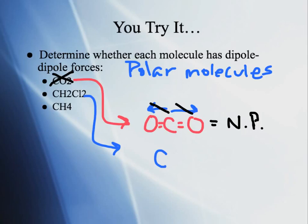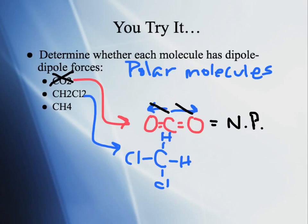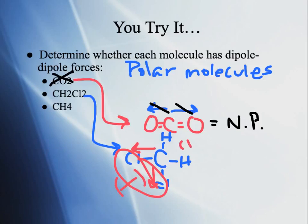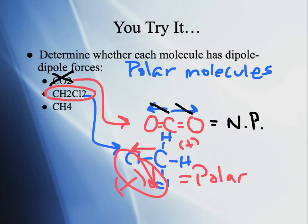For CH2Cl2: the C–H bond is nonpolar, but the carbon–chlorine bond is definitely polar. Chlorine pulls more force on those electrons than carbon, giving a negative side over on the chlorines and a positive side on the other end. This makes it a polar molecule, so a collection of CH2Cl2 molecules will have dipole-dipole intermolecular forces.